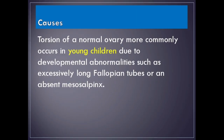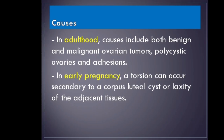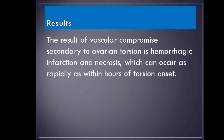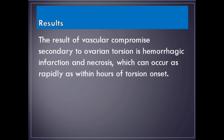Causes. Torsion of a normal ovary more commonly occurs in young children due to developmental abnormalities such as excessively long fallopian tubes or an absent mesosalpinx. In adulthood, causes include both benign and malignant ovarian tumors, polycystic ovaries, and adhesions. In early pregnancy, torsion can occur secondary to a corpus luteal cyst or laxity of adjacent tissues. The result of vascular compromise is hemorrhagic infarction and necrosis, which can occur as rapidly as within hours of torsion onset.